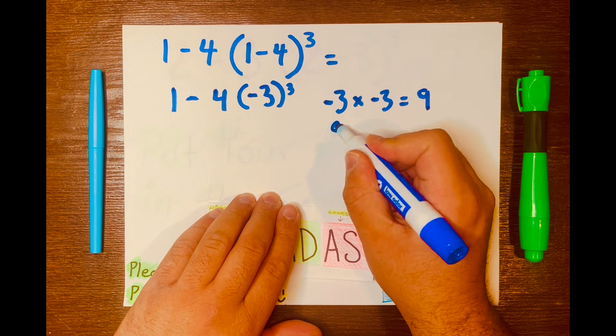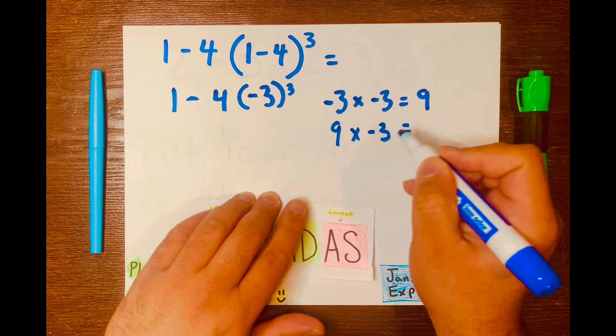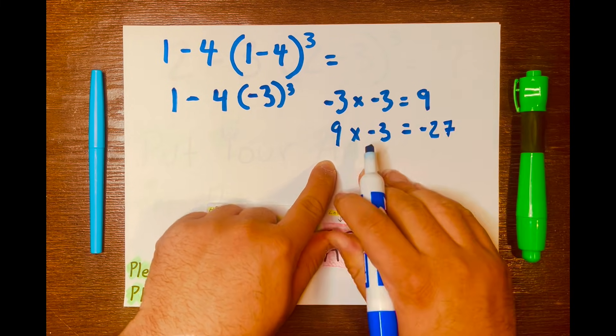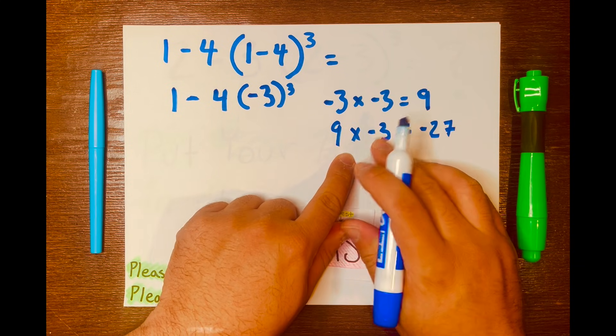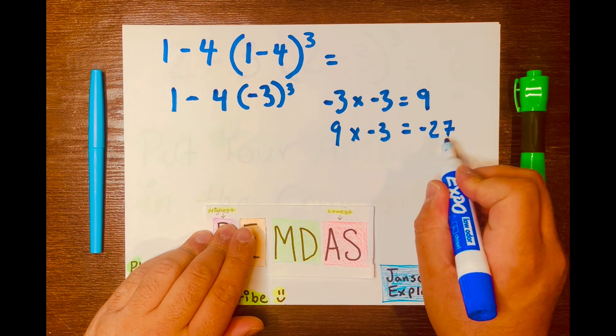And then 9 times negative 3 equals negative 27, because a positive times a negative gives us a negative. So we have negative 27.